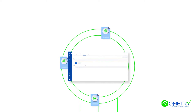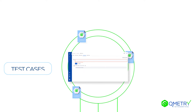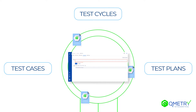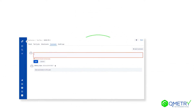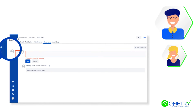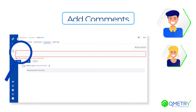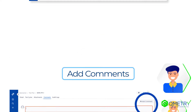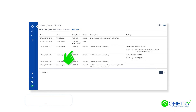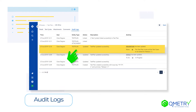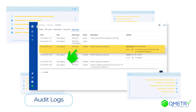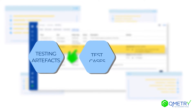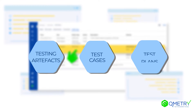Using the comments feature for test cases, cycles and test plans, users can keep track of changes and comments from multiple team members working on specific test assets. Or use audit logs functionality to view the audit history for testing artifacts, test cases or test plans.